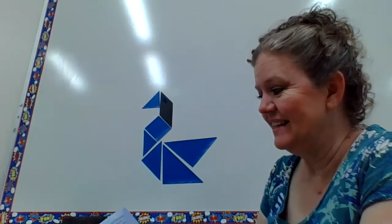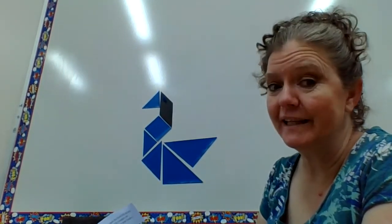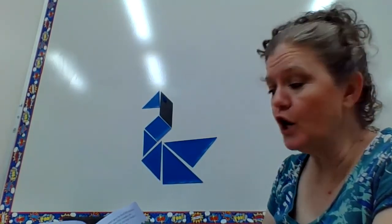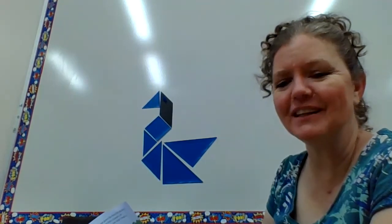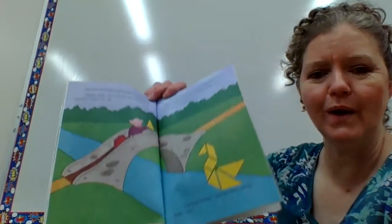So, the swan gave the little pig seven magic shapes. Do you remember what they are? Two little triangles, one medium-sized triangle, two large triangles, a square, and a parallelogram. Use them wisely, said the swan. And he swam away.